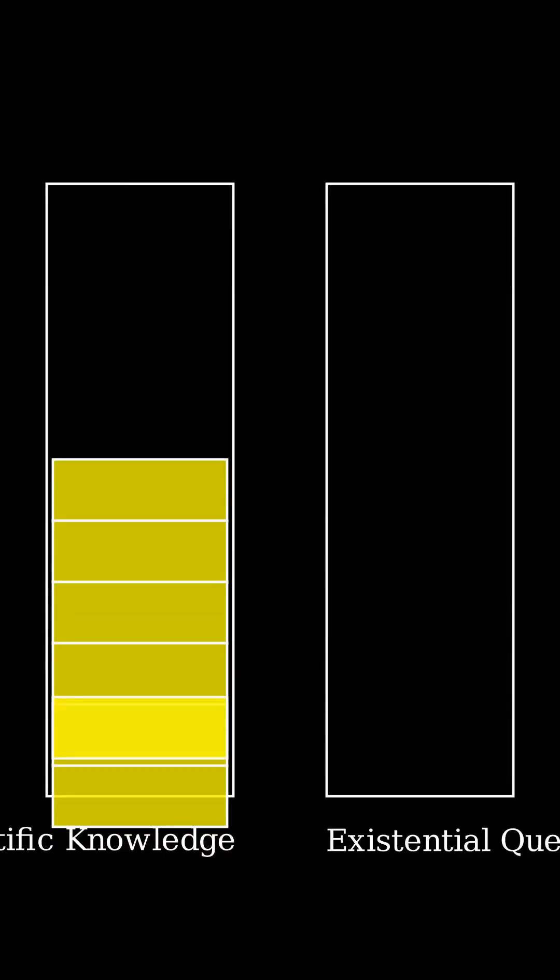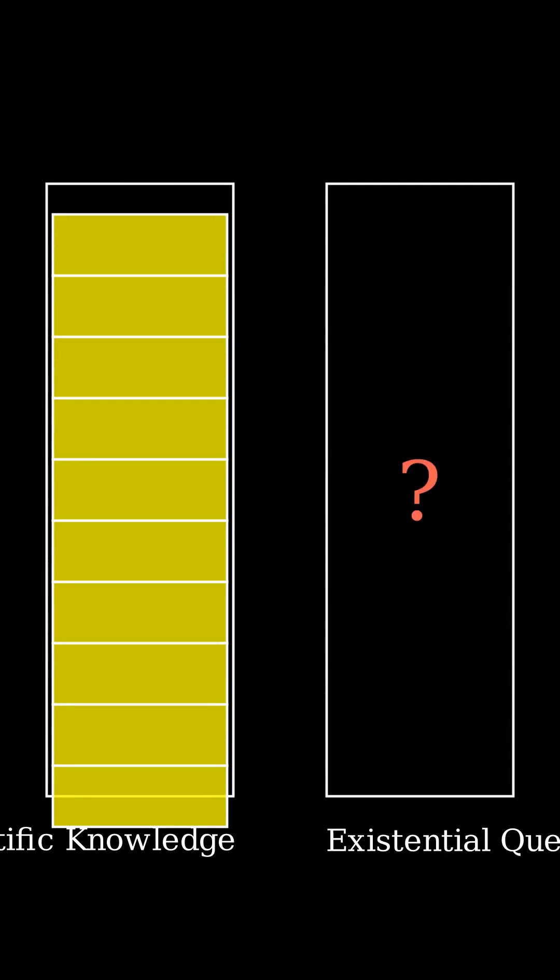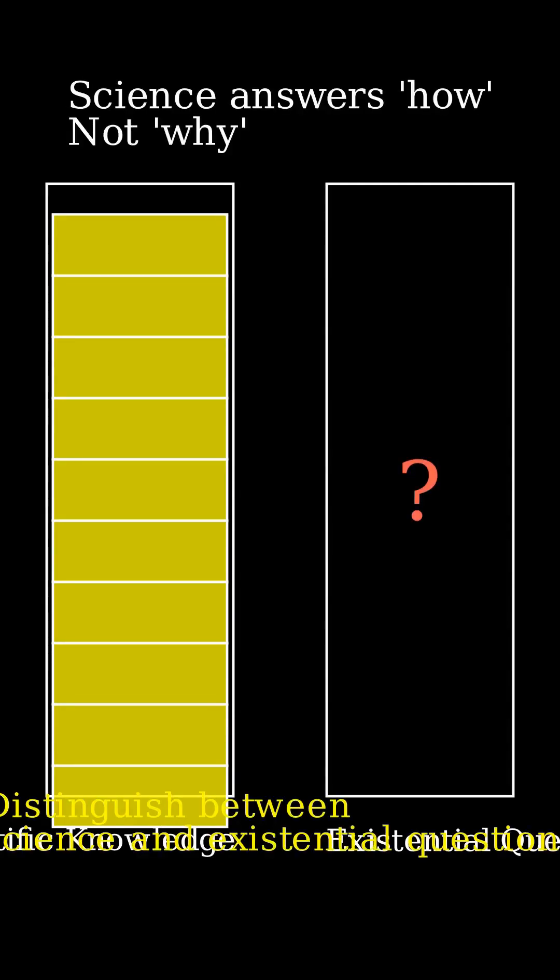In conclusion, many atheists use scientific language to support their belief that God does not exist, but it is important to distinguish between what science can tell us about the natural world and existential questions.